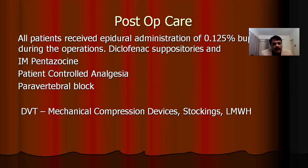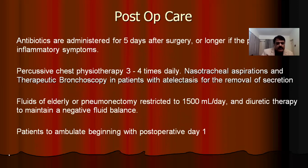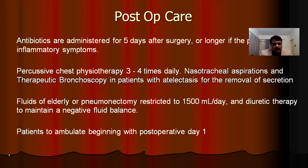Post-operative care is addressed mainly to two areas. One is relief of pain, which allows the patient to clear secretions — addressed with epidural analgesia, systemic analgesics, or paravertebral blocks, which have been found to be very effective. Beware of deep vein thrombosis and pulmonary embolism. Antibiotics should be administered for at least five days or for the duration of symptoms. The need for chest physiotherapy cannot be overemphasized. Nasotracheal aspiration and therapeutic bronchoscopy clear the bronchial tree. Percussion, spirometry, and fluid restriction according to age and amount of lung resected are all important.